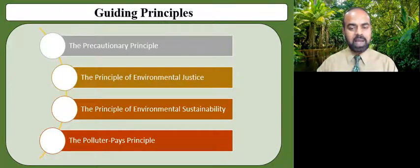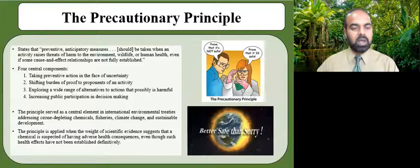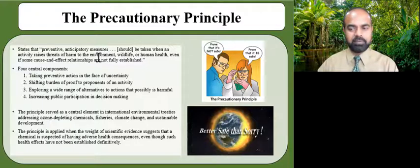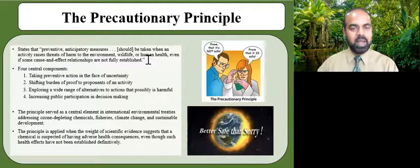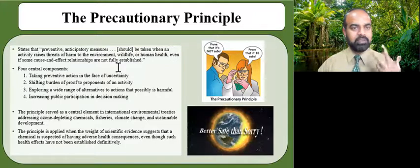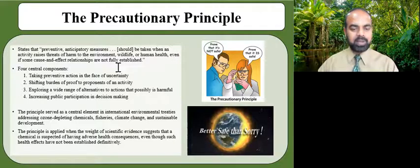As you are introduced to these principles, reflect on how these concepts guide environmental policymakers in formulating their policies when protecting and preserving the health of our environment. The precautionary principle states that preventive anticipatory measures should be taken when an activity raises threats of harm to the environment, wildlife, or human health, even if some cause-and-effect relationships are not fully established. This principle has four central components: one, taking preventive action in the face of uncertainty; two, shifting the burden of proof to the proponents of an activity; three, exploring a wide range of alternatives to possibly harmful actions; and four, increasing public participation in decision making.